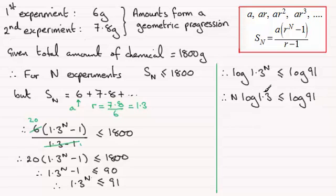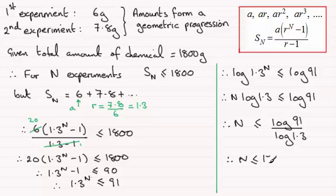Next, we divide both sides by the log of 1.3. So we have N is less than or equal to the log of 91 divided by the log of 1.3. If you work this out on your calculator, you end up with N is less than or equal to 17.193 and so on.